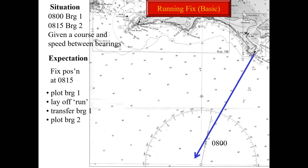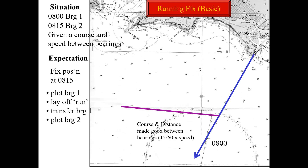Running fix assumes the vessel is somewhere on this position line. You take any point on this position line and draw the course and distance traveled for a particular time — in this case, 15 minutes. The speed drawn is 15/60 multiplied by the speed of the ship. In coastal navigation you are trying to plot the ship's position frequently; sometimes less than 15 minutes, but for academic purposes we use 15 minutes. You draw the ship's course and speed made good for the time of travel.